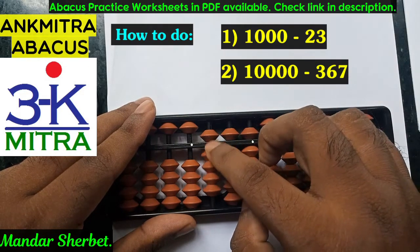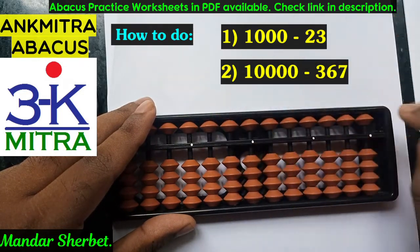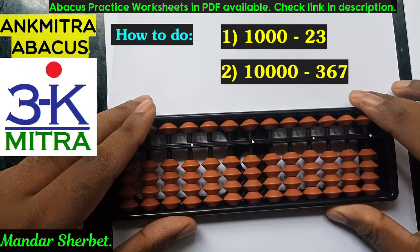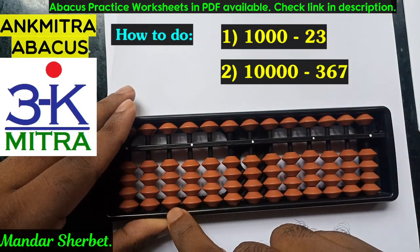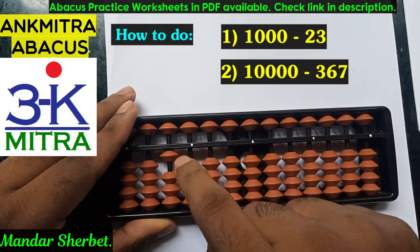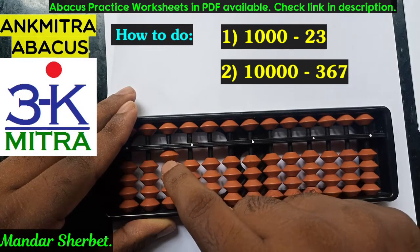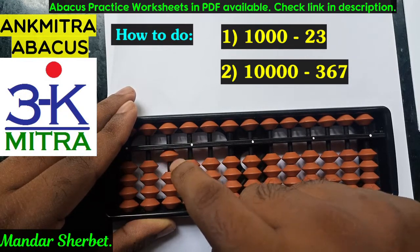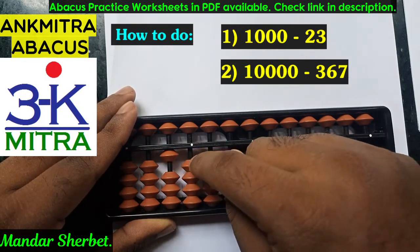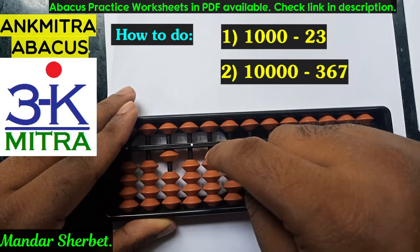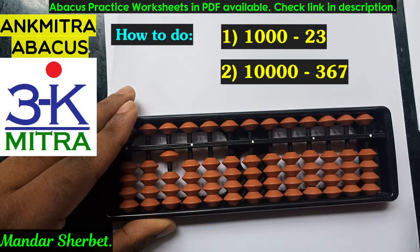Let's check out the second sum now. The starting number is 10,000. 10,000 being a 5-digit number, it will start on the 5th rod. On the 10,000th place — that is the 5th rod — I have taken 1, and there are 0s on the 1000s, 100s, 10s, and units place.